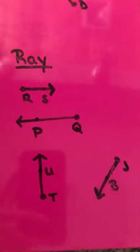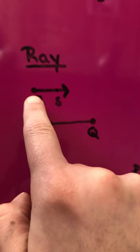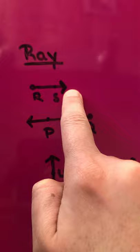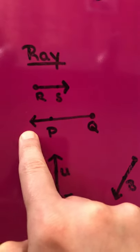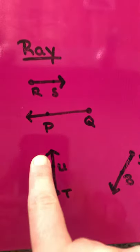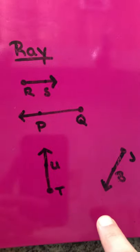But here, if you take a look, you should notice that rays have an end point and an arrow. An end point and an arrow. End point, arrow, end point, arrow.